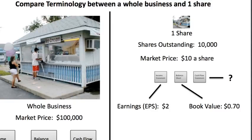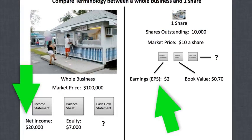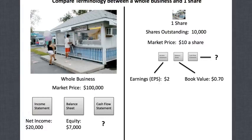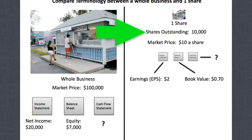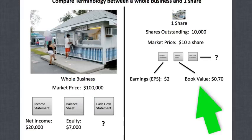For one share, the market price is $10. The earnings for one share is the same concept as net income, but 'earnings' is used when valuing one share while 'net income' is for the whole business. If you take the $20,000 net income and divide by 10,000 shares outstanding, you get $2. EPS stands for earnings per share — so the EPS for one share is $2.